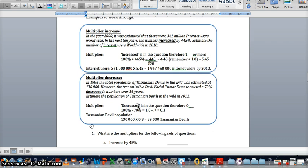100% is what we have. We have 100% of the population, we're going to have 100% of 361 million, plus another 445%. All up, really, this should be 545%, which makes this 5.45.